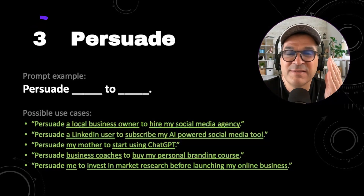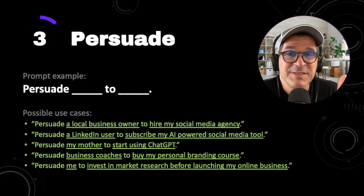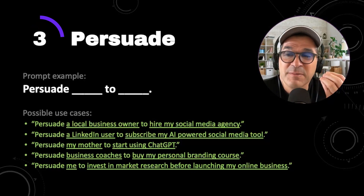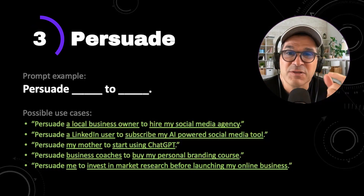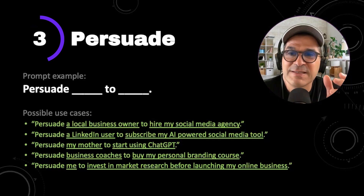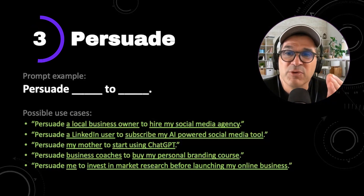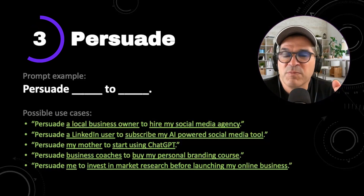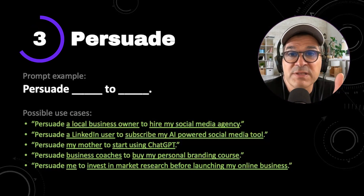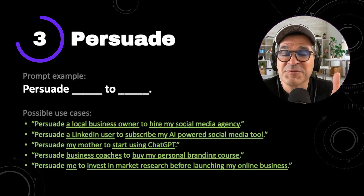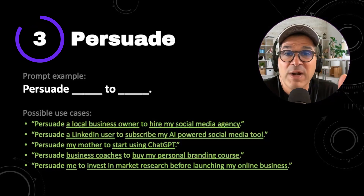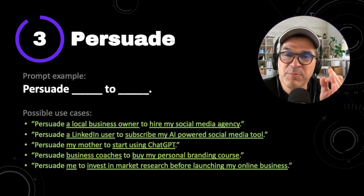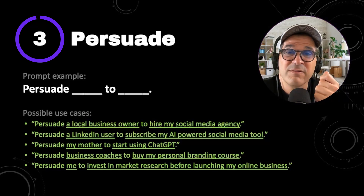Number three, we have persuade. This is one of my favorite prompts. ChatGPT knows how to write for us, but sometimes that writing is pretty flat, and sometimes you need to be more persuasive — well, just ask ChatGPT to do it for you. Start your prompt off with the word persuade. The example here is persuade blank to blank. Some possible use cases: persuade a local business owner to hire my social media agency, persuade my mother to start using ChatGPT, or persuade business coaches to buy my personal branding course. Super simple prompt, great for salespeople, copywriters, and anyone that needs to be more convincing with their writing.